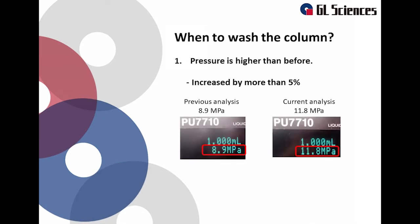The first case is when the pressure is more than 5% higher than previous analysis. When the pressure is high, it might be that the column is clogged. It is important to record the pressure of your new column under your analysis conditions. That way you can monitor pressure rises.